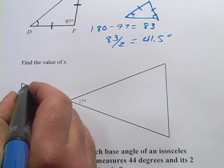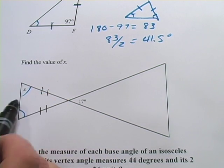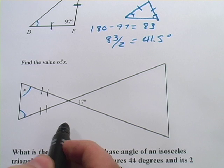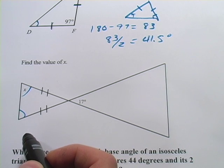And it looks like the base angles are down here and X is one of our base angles. But we don't have any other angles in this triangle. So how are we going to figure it out?